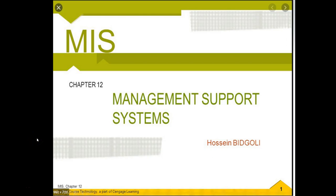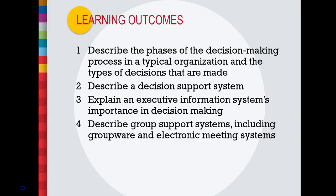MIS Chapter 12 - Management Support Systems. This is a pretty interesting chapter for those interested in business. The learning outcomes include: what are some of the phases that a decision-maker goes through, and what are some of the kinds of decisions that are made.